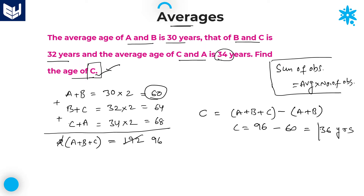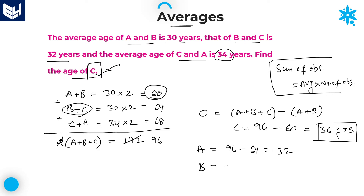The age of C is equal to 36 years. If you want the age of A, total 96 minus B plus C (which is 64) gives A equals 32. If you want B, total 96 minus A plus C (which is 68) gives B equals 28. But in this question he is asking about the age of C, so the required answer is 36 years.